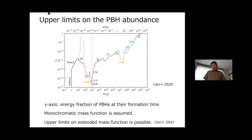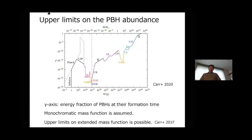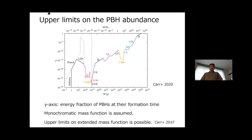This figure shows the most recent upper limits on PBH abundance from various observations. Depending on the mass of the primordial black holes, they affect the universe or produce various astrophysical effects — for instance gravitational lensing, CMB effects, or dynamical friction. So far we haven't detected any positive signal of the existence of primordial black holes. The y-axis represents the energy fraction of primordial black holes at their formation time, not the present time — specifically the energy fraction when they are formed in the radiation-dominated universe.